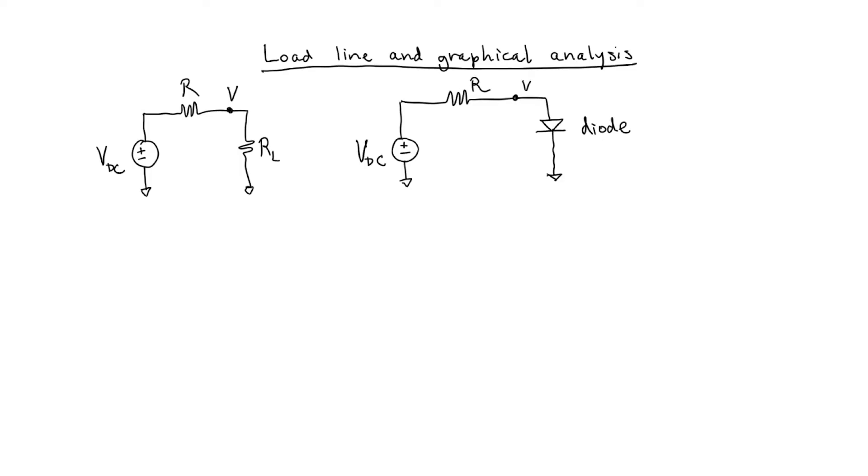So let's first draw two different circuits. In the first circuit, I'm going to draw the load as a resistor, and in the second circuit, I'm going to draw the load as a diode, and a diode is a nonlinear circuit element. In each of these two circuits, a DC voltage source supplies a current I through a resistor R.